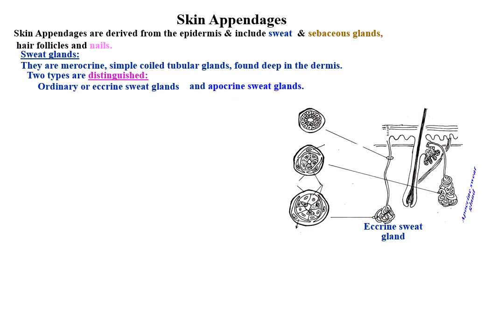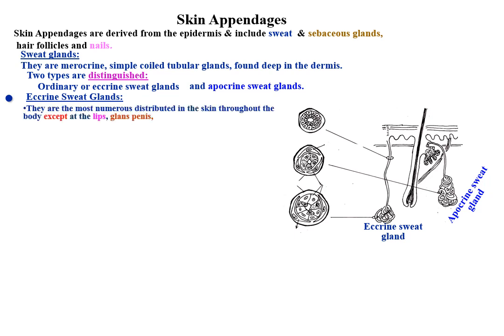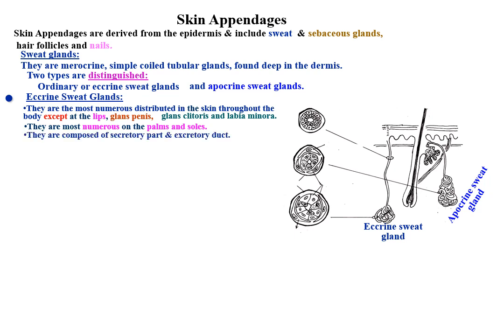Eccrine sweat glands are the most numerous, distributed throughout the skin of the body, except at the lips, glans penis, glans clitoris, and labia minora. They are most numerous on the palms and soles. They are composed of a secretory part and excretory ducts. The secretory part is highly coiled tubular.